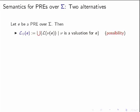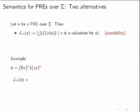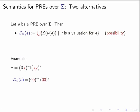Using valuations, there are two natural choices for semantics. The first is to take the union of all expressions resulting from applying all possible valuations — this is called the diamond, or possibility semantics. For example, the possibility language of an expression is the union of languages obtained when we send both variables to 0, x to 0 and y to 1, and so on for all valuations.